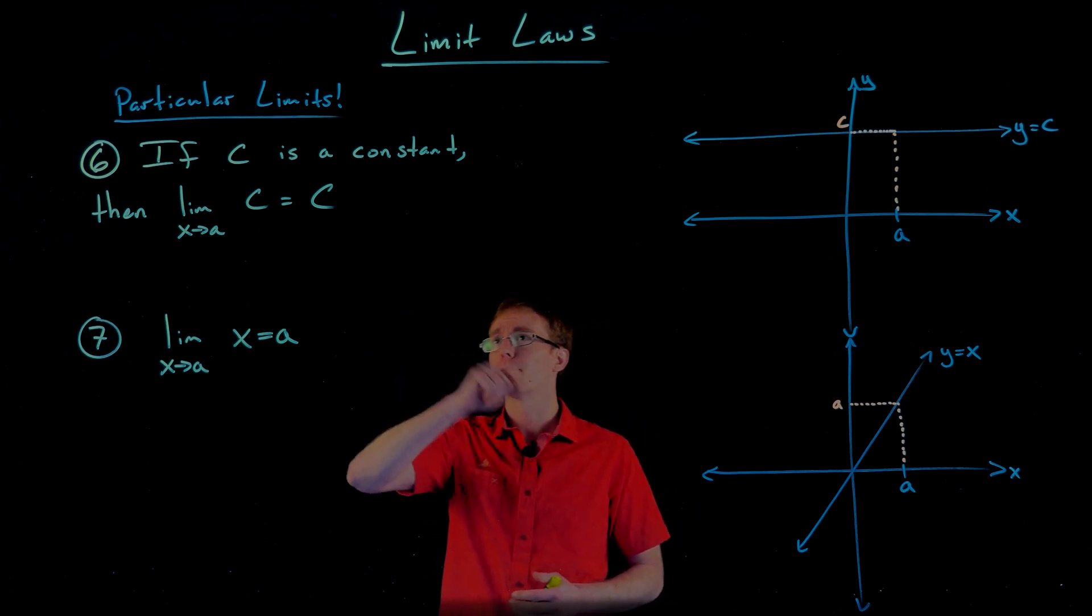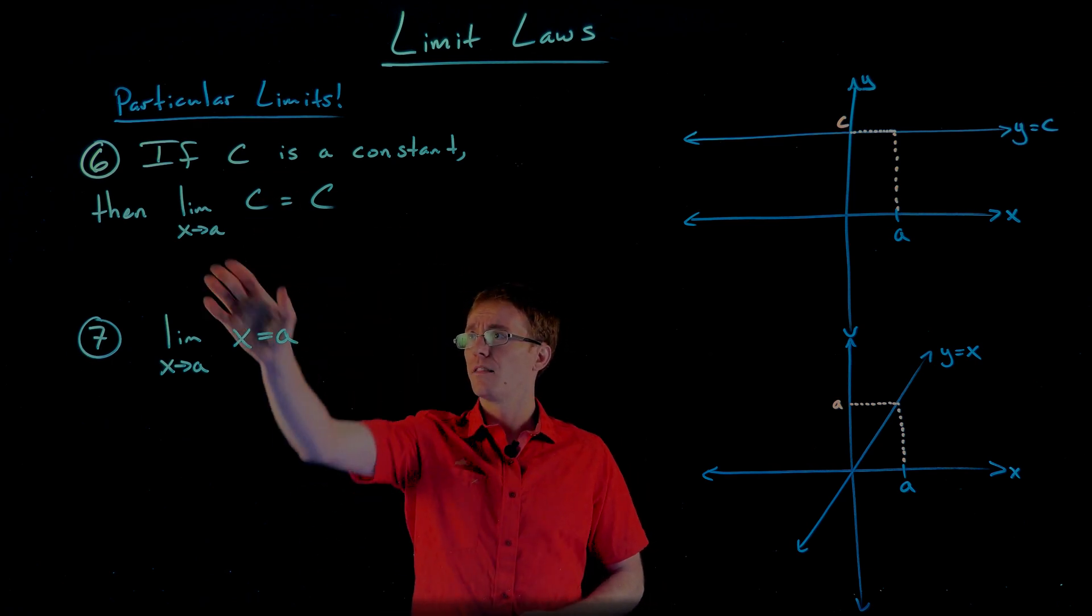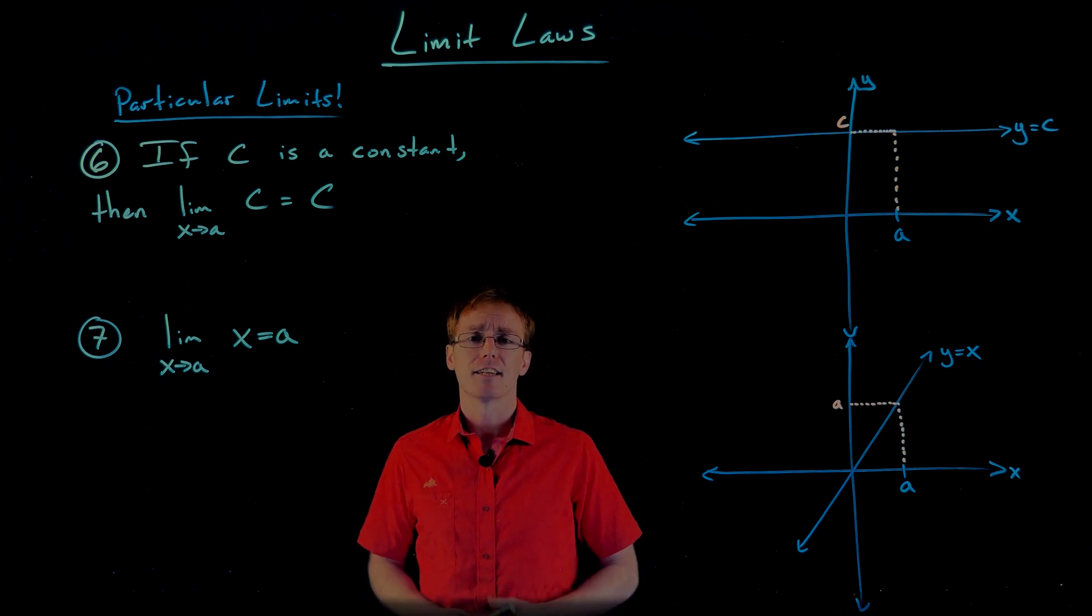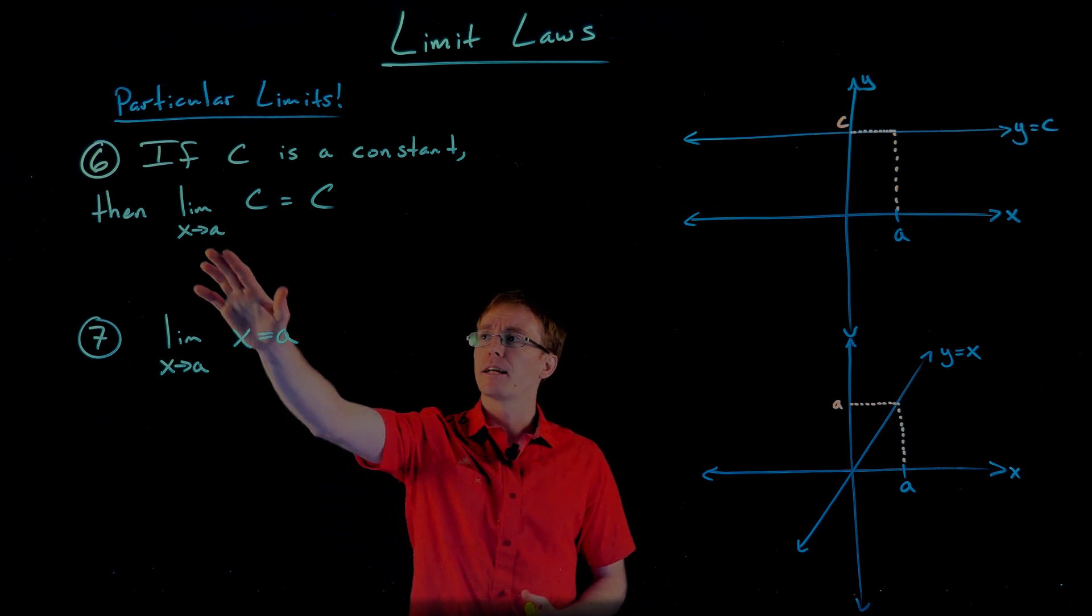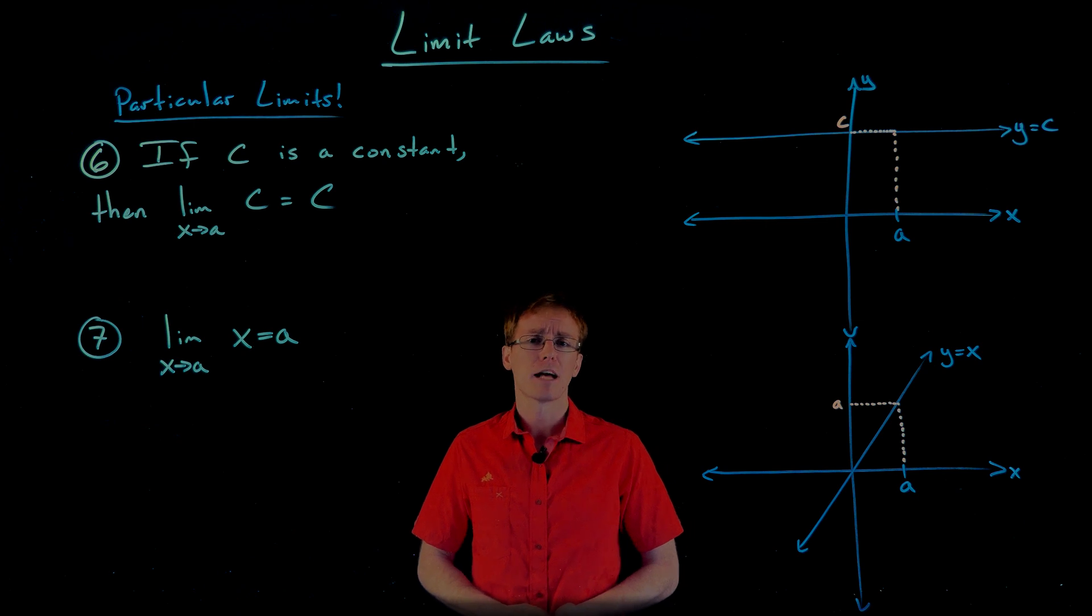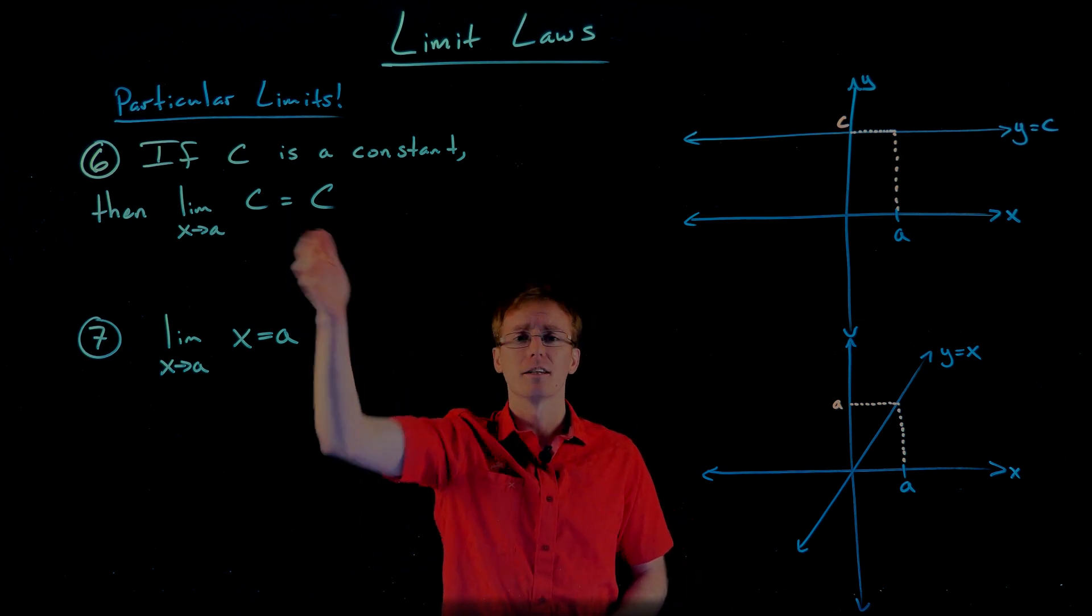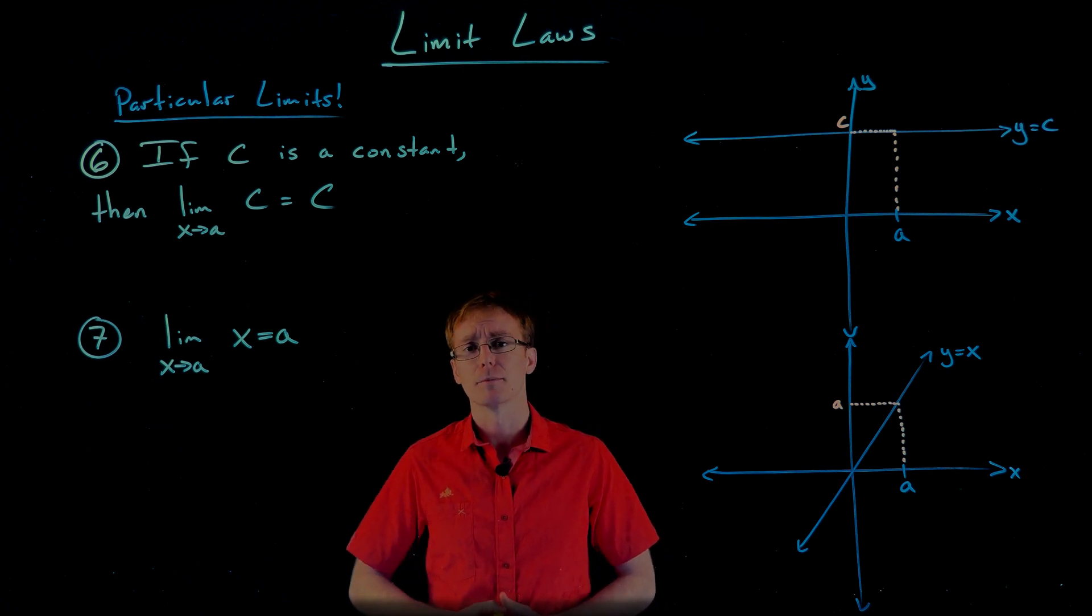So I'm calling limit law number six. If c is a constant real number, then the limit as x approaches a of that constant c is the same as the constant itself. Remember, when we were trying to find one of these limits, we're trying to figure out how is the output of our function behaving as the input gets closer and closer to a. It doesn't care what happens necessarily at a, just what happens really close by. And if we're looking at a constant function, its output is always a constant. So the limit is going to be equal to that constant.